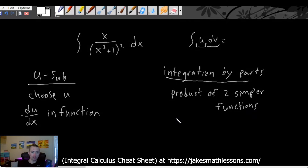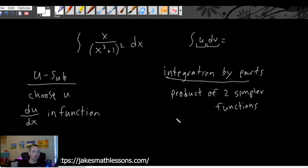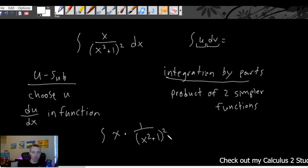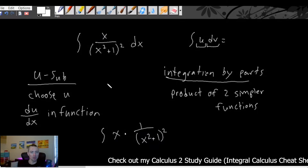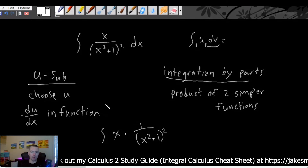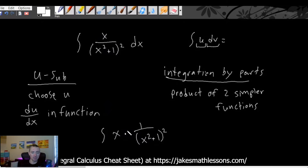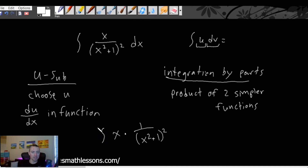If you don't have a product of two simpler functions, you're not going to be able to use integration by parts. However, you may be able to do some manipulation of the function to get it to be a product — for example, we could rewrite this as the integral of x times one over x squared plus one, all squared. So now it is a product. Just based on the fact that we have a fraction, we don't necessarily want to rule out integration by parts right off the bat, though typically when you have a fraction like this, it's generally not going to be the easiest method.